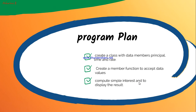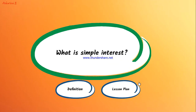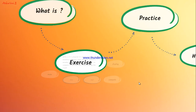Now the program plan — I'll tell you how to write the program and what things have to be declared. Firstly, you are going to create a class with data members principal, time, and rate. Next, you are going to accept values for principal, time, and rate by creating a member function. Then write the calculation function, and lastly display whatever you have calculated.